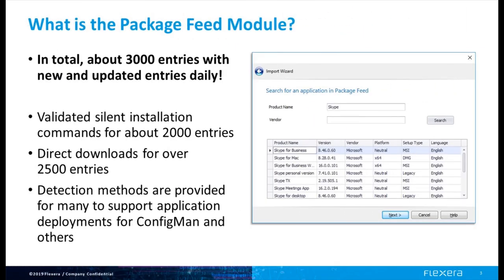This time-saving resource includes details on about 3,000 different installers available in the market today. Included are validated silent installation commands for about 2,000 installers, integrated download capability for 2,500 installers, and in many cases detection rules, which can be valuable when deploying the applications with systems like Microsoft's Configuration Manager.